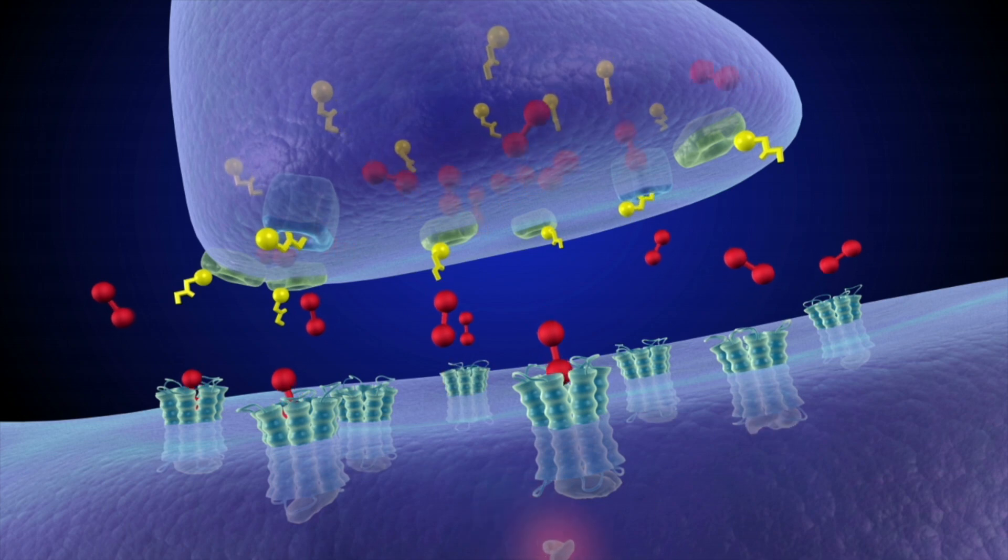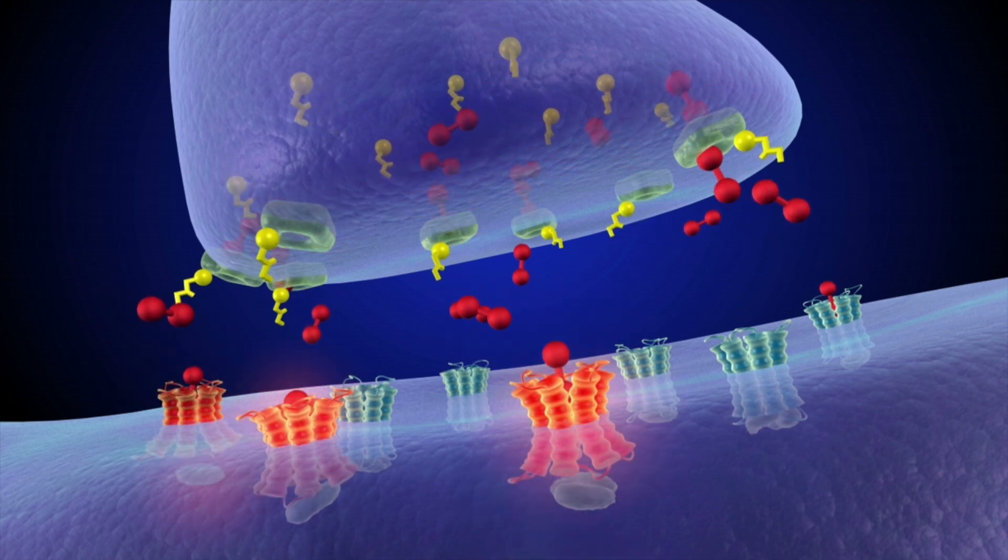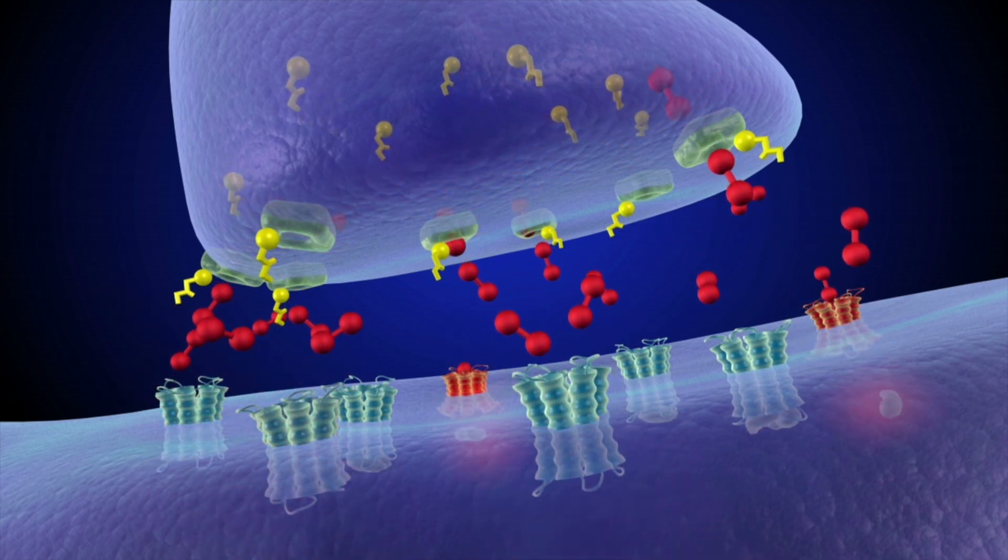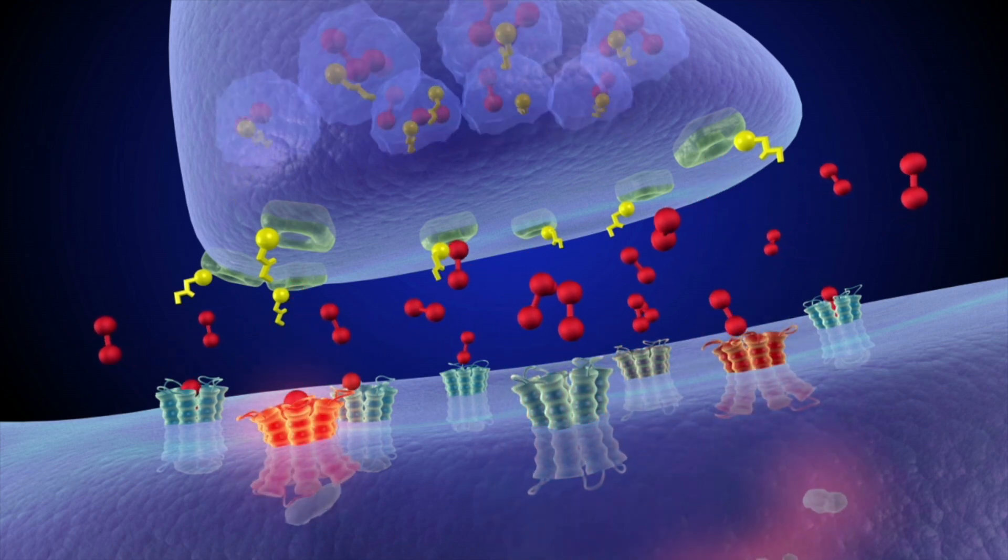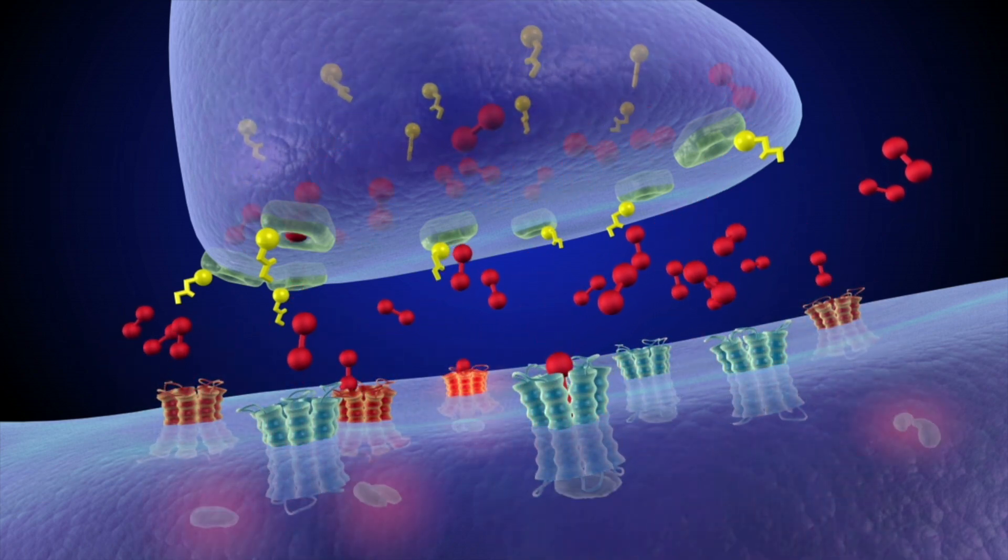This leads to much more dopamine in the synapse, where it becomes trapped since meth prevents the transporters from removing it.